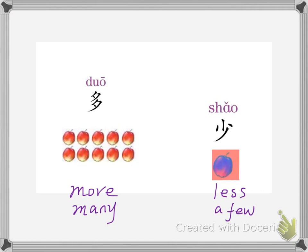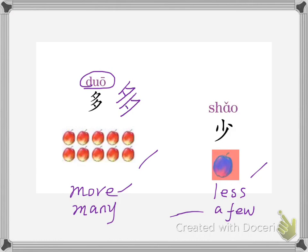This is more, or many, and this is less, or a few. More, or many, in Chinese is 多. Its writing is like this: this is the first stroke, this is the second stroke, this is the third stroke, this is the fourth stroke, this is the fifth stroke, and this is the sixth stroke.